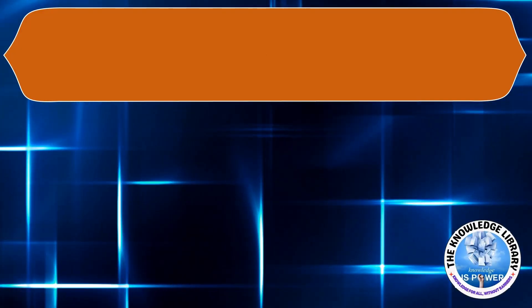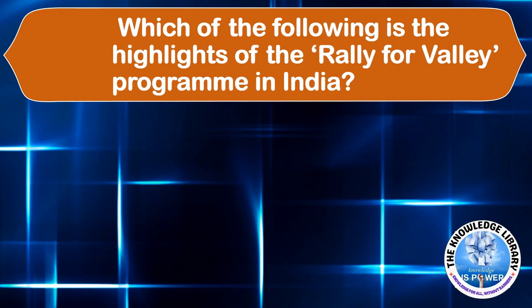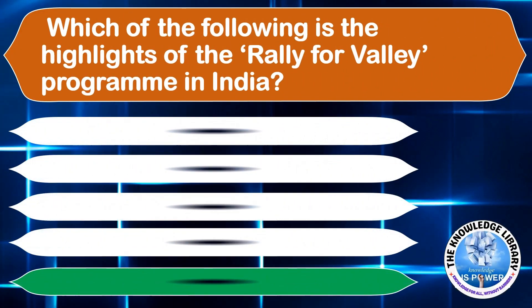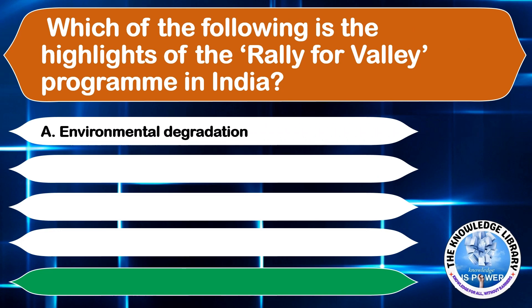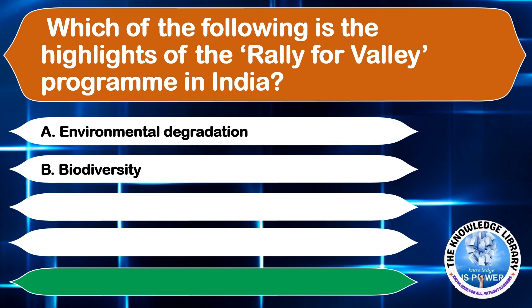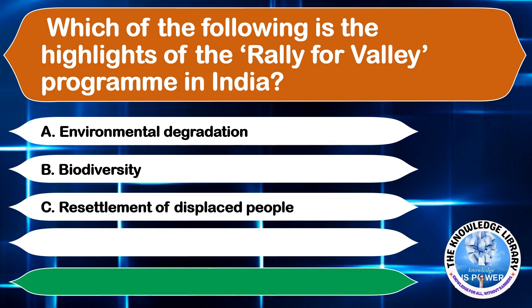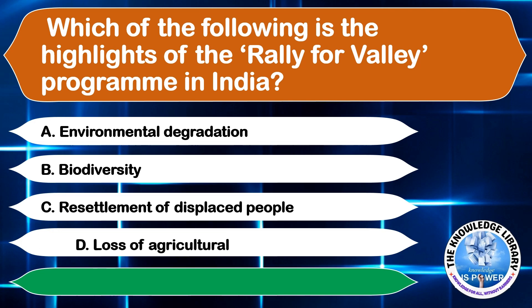Which of the following is the highlight of the Rally for Valley program in India? A. Environmental degradation, B. Biodiversity, C. Resettlement of displaced people, or D. Loss of agriculture. The correct answer is option A, Environmental degradation.